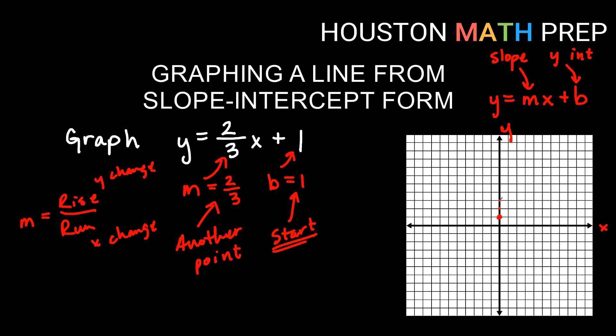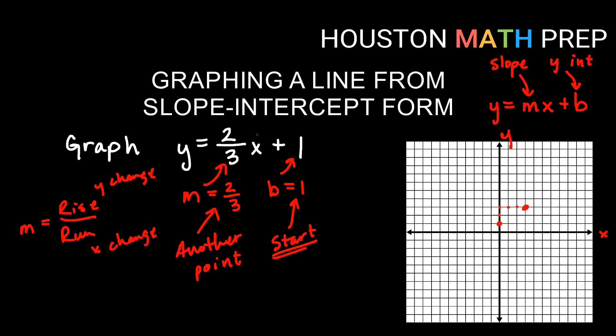My rise is two, which means I would go up two. And my run, being sideways, is three. So then I go three. And I get to this point once I go up two and over three. And then I simply draw my line through those two points. And that is my line for the equation y equals two-thirds x plus one.